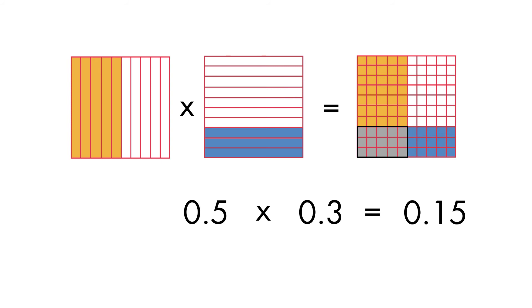When we multiply decimals, the number of decimal places in our answer will be equal to the total number of decimal places we have in our factors. Here, each factor has one decimal place, so our answer must have two decimal places.